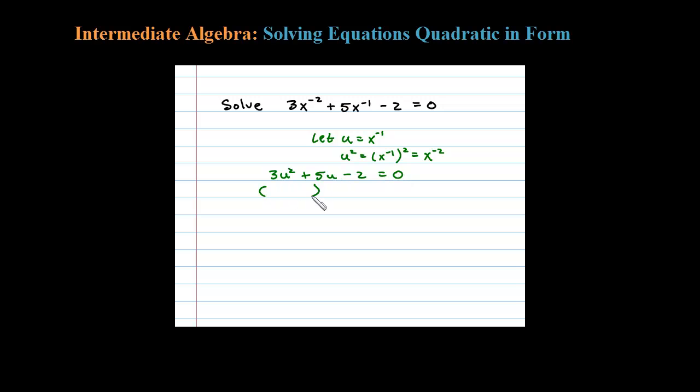Let's go ahead and factor that. So 3u squared breaks up as 3u times u. If it doesn't factor, we would use the quadratic formula. Let's factor 2 as 1 times 2.